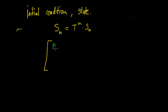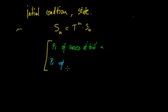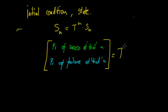The probability of success at trial N and probability of failure at trial N is equal to T to the N times S zero.